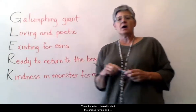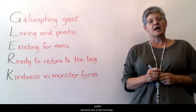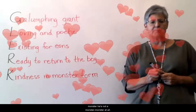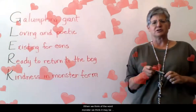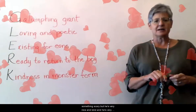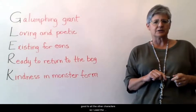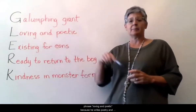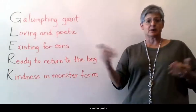Then for the letter L, I use the phrase 'loving and poetic,' because he's a very kind bog monster — he's not a monster monster at all. When we think of the word monster we might think of something scary, but he's very nice and kind and very good to all the other characters. So I use 'loving and poetic' because he writes and recites poetry.